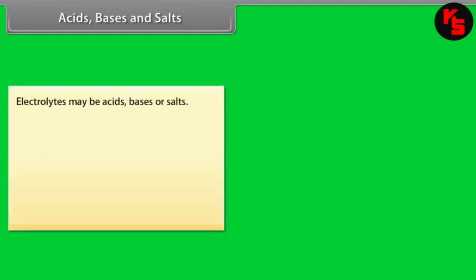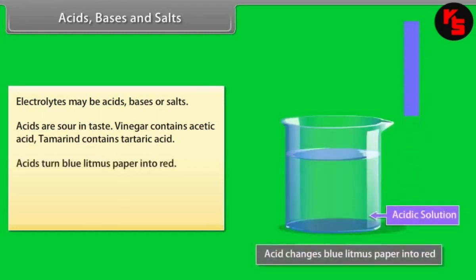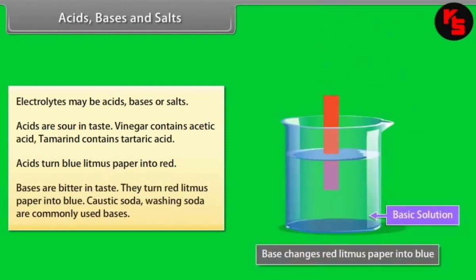Acids, Bases, and Salts. Electrolytes may be acids, bases, or salts. Acids are sour in taste — vinegar contains acetic acid and tamarind contains tartaric acid. Acids turn blue litmus paper red. Bases are bitter in taste and turn red litmus paper blue. Caustic soda and washing soda are commonly used bases.